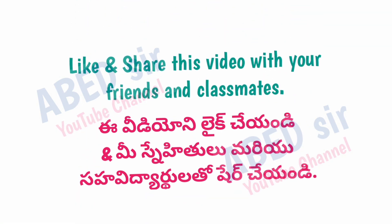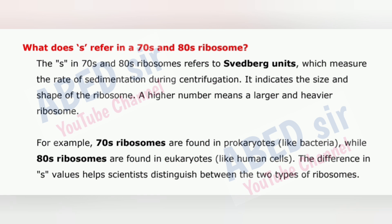Next important question: What does S refer to in a 70S and 80S ribosome? The S in 70S and 80S ribosomes refers to Svedberg units, which measure the rate of sedimentation during centrifugation. It indicates the size and shape of the ribosome. A higher number means a larger and heavier ribosome. For example, 70S ribosomes are found in prokaryotes like bacteria, while 80S ribosomes are found in eukaryotes like human cells. The difference in S values helps scientists distinguish between the two types of ribosomes.